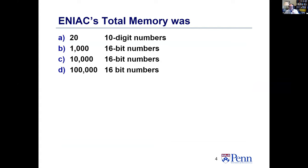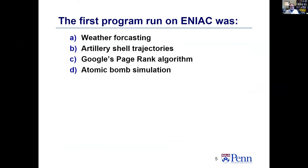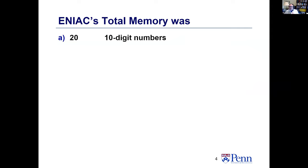Given that, how much memory did it have? 20 ten-bit numbers, 1,000 16-bit numbers, or 10K or 100K? The completely amazing answer is 20 ten-bit numbers. It had 20 accumulators, each one holding a 10-digit number — it was a decimal machine, and that was the only active memory it had. It had big function tables, which were for fixed storage — the first ROMs, as far as I can tell.